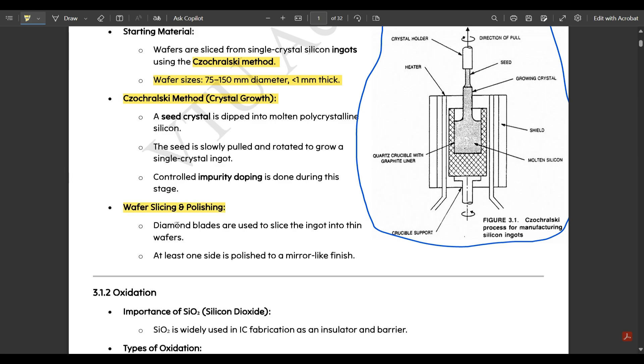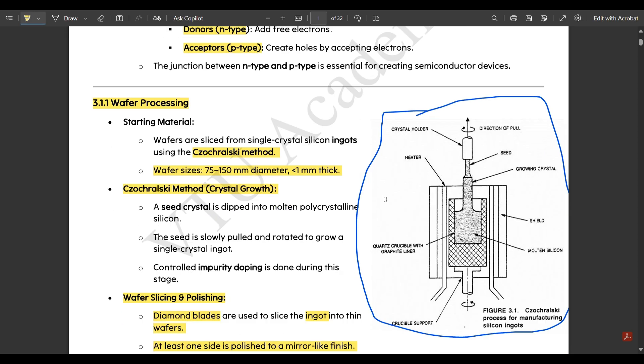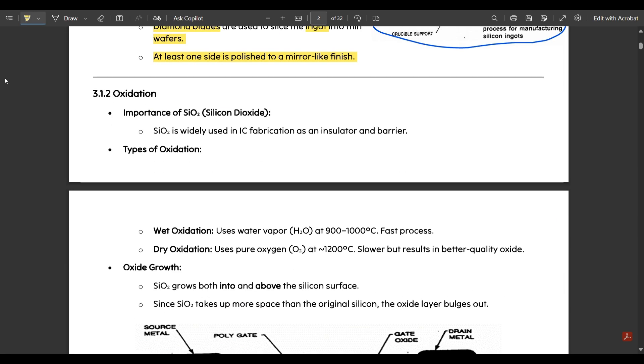Next is wafer slicing and polishing. Diamond blades are used to slice the ingot into thin wafers. Since this is wafer processing, wafer manufacturing, diamond blades are used in order to slice them out. At least one side is polished to make a mirror-like finish. In this way the wafer manufacturing is done. Next is about oxidation.